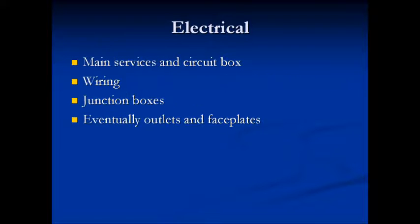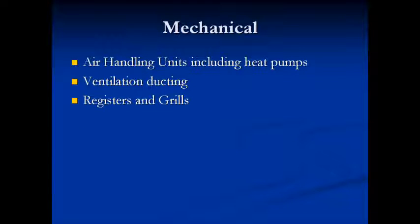Electrical components would include main services, circuit box, conduit, wiring, junction boxes, and eventually outlets and faceplates. Mechanical systems would include air handling units including heat pumps, ventilation ducting, registers, and grills.